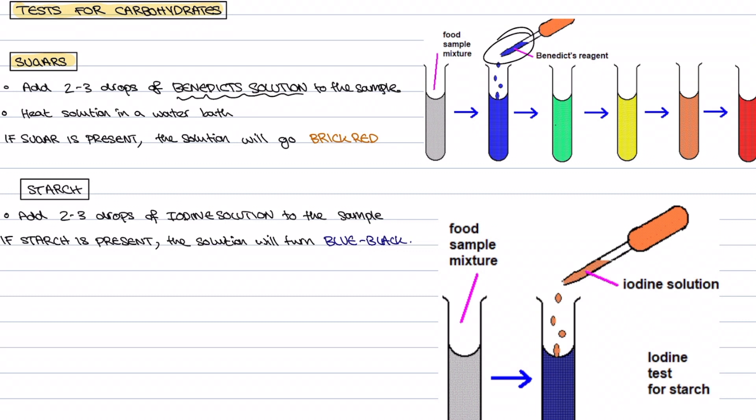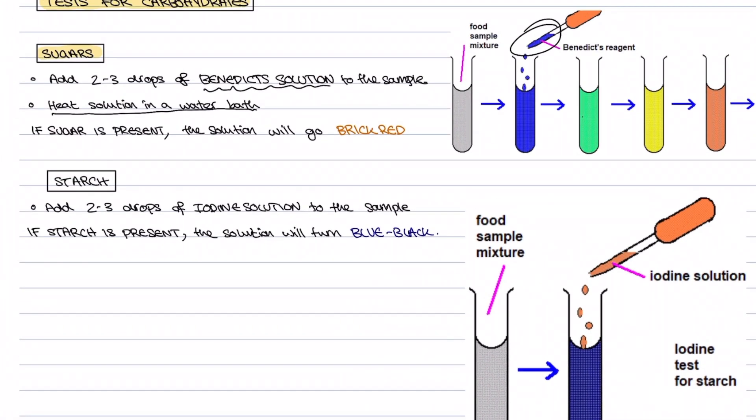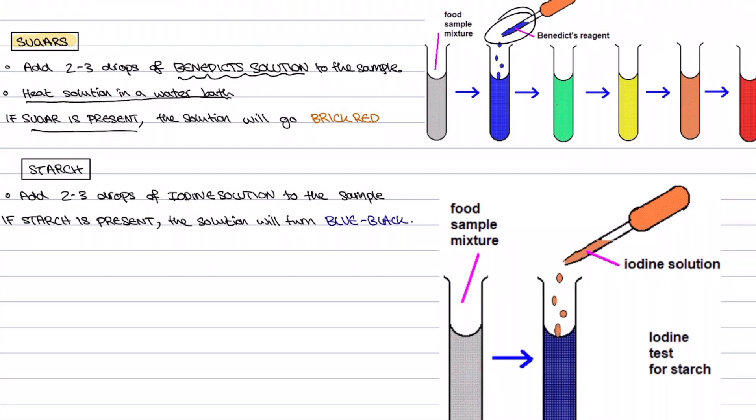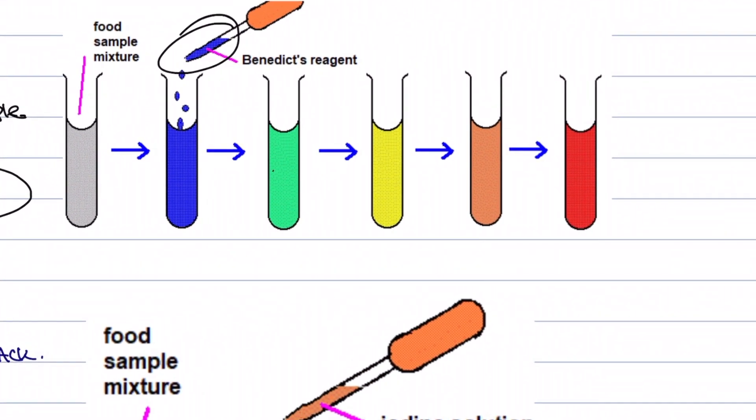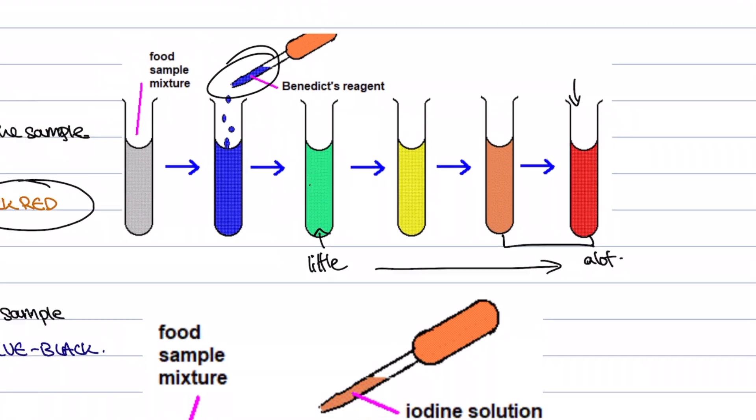We need to heat that solution up in a water bath in hot water and then our positive test is if sugar is present the solution is going to go a brick red color. These usually show a sugar but what can happen sometimes is we can have anywhere from a green all the way to our dark red and all this shows us is how much sugar is in that solution. If we have a little bit of sugar it will be green to yellow and if we have a lot of sugar it's going to go red.